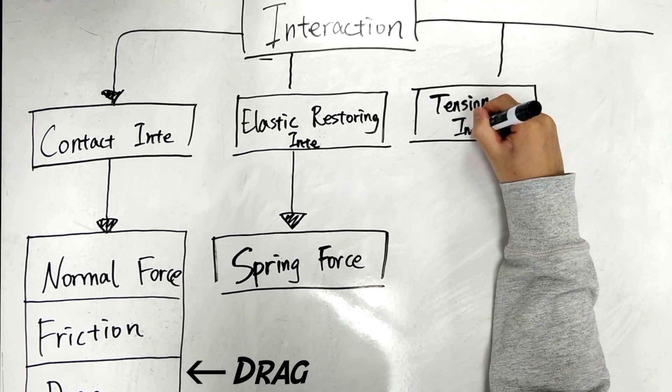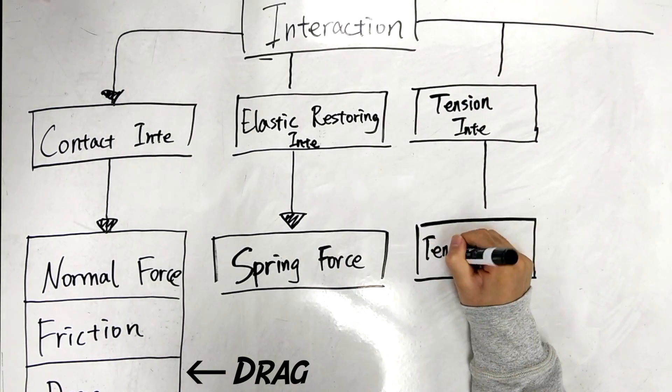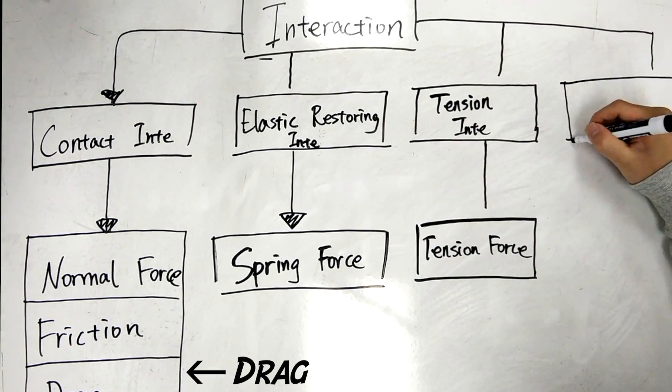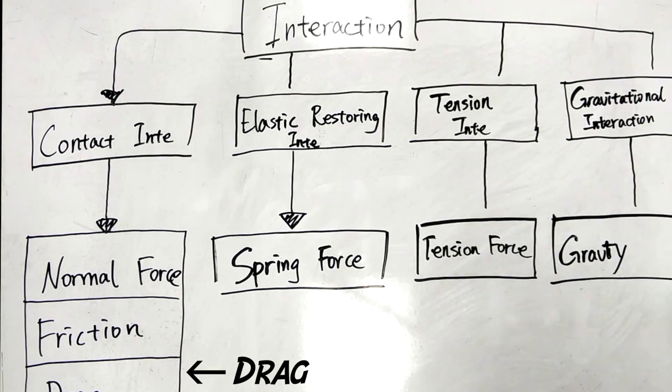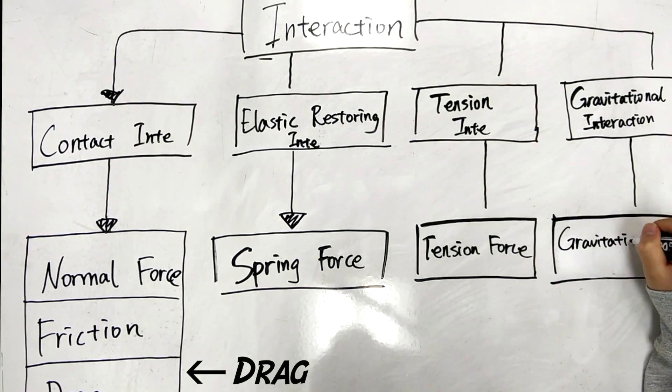Next, we have the tension interaction, and this one causes the tension force. Finally, we have the gravitational interaction, and this one is responsible for gravity, or gravitational force to be proper.